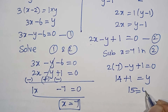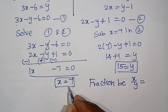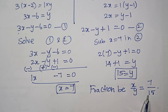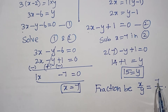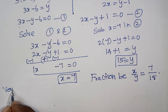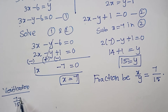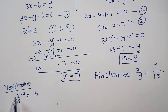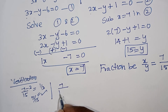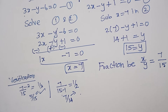Substituting x equals 7: 2 into 7 minus y plus 1 equals 0, so 14 plus 1 equals y, giving y equals 15. Therefore the fraction x by y is 7 by 15. We can verify: 7 minus 2 over 15 equals 5 by 15 equals 1 by 3, and 7 over 15 minus 1 equals 7 by 14 equals 1 by 2. Correct.